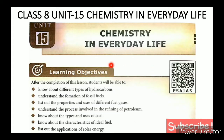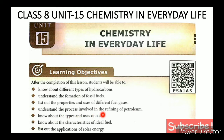The learning objectives of Chemistry in Everyday Life are: know about different types of hydrocarbons, understand the formation of fossil fuels, list out the properties and uses of different fuel gases, understand the process involved in the refining of petroleum, know about types and uses of coal, know about characteristics of ideal fuel, and list out the applications of solar energy.